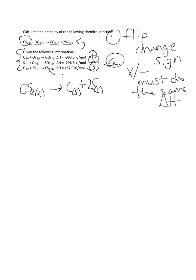Again, remember when you flip an equation, you must change the sign. So now instead of positive 87.9 kilojoules per mole, it is negative 87.9 kilojoules per mole. We only needed 1 CS2 – that's all we have – so we do not need to multiply or divide this equation by anything.